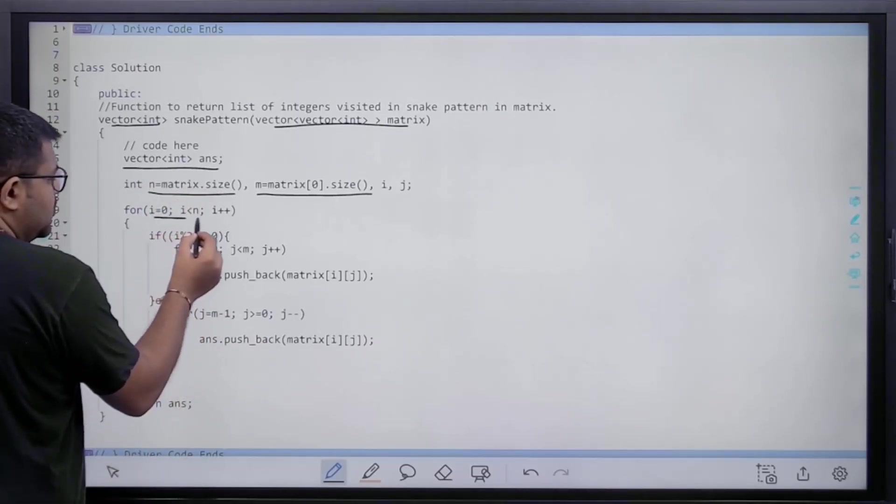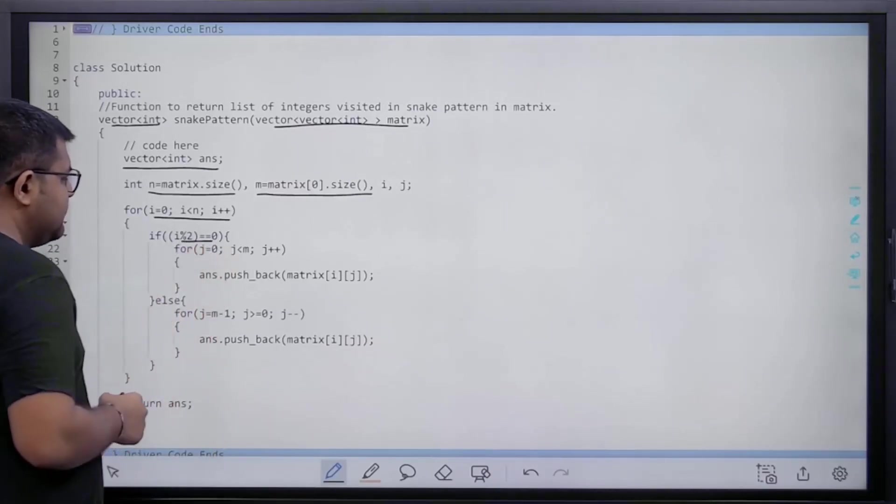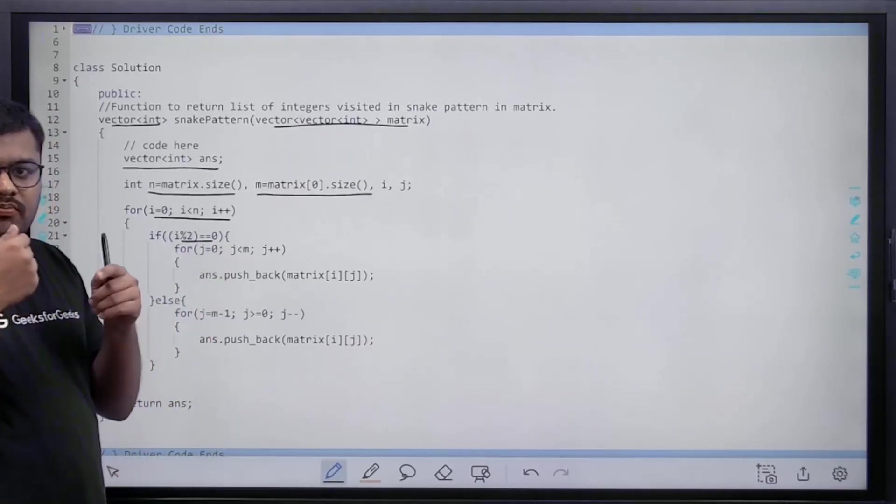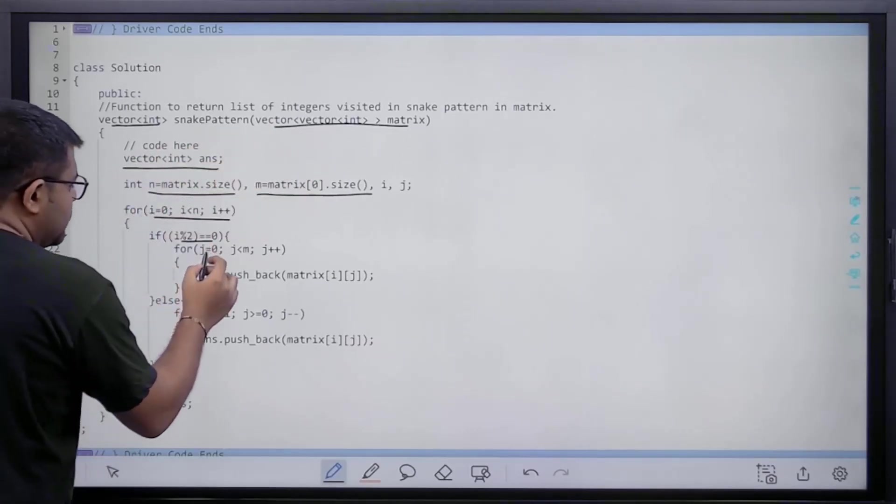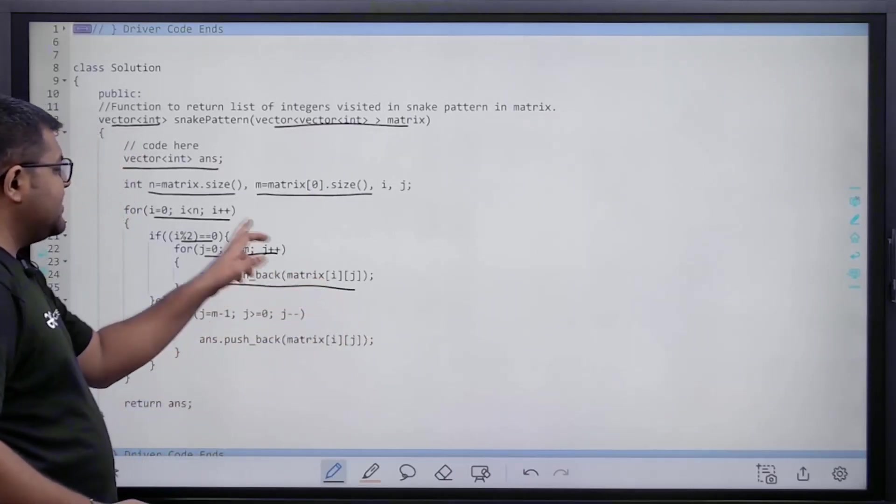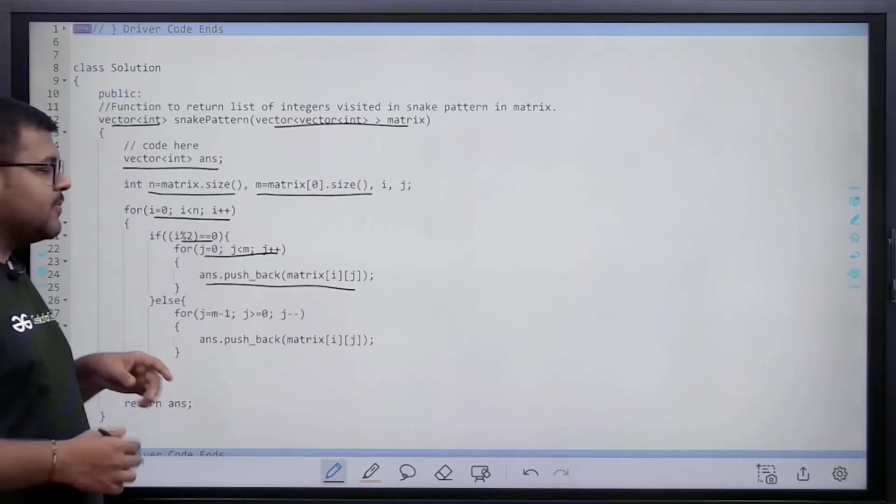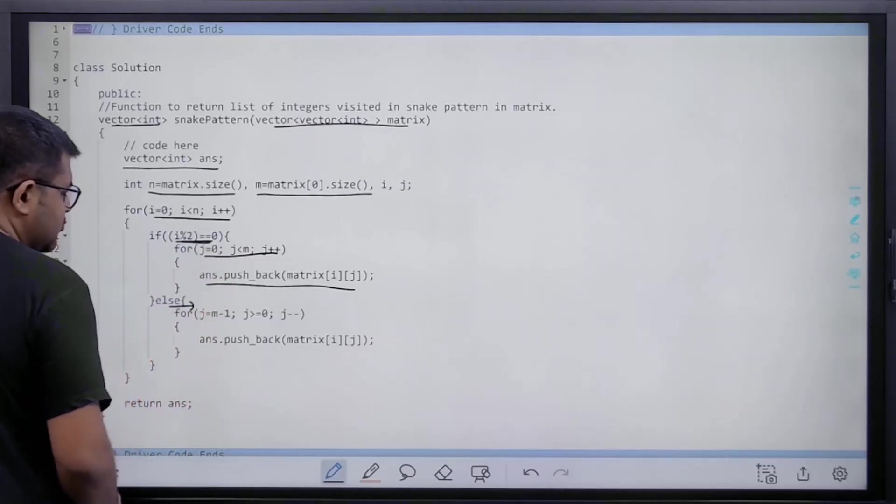Then what I have done, I have traversed through all the rows starting from 0 to n minus 1. If the row number is even, if the index is even, then I will move the columns from left to right, that is 0 to m minus 1. For j equals 0 to m minus 1, answer.pushback matrix[i][j]. i is the row number, j is the column number. Else, if this is not even, this is odd, then we will execute this part.